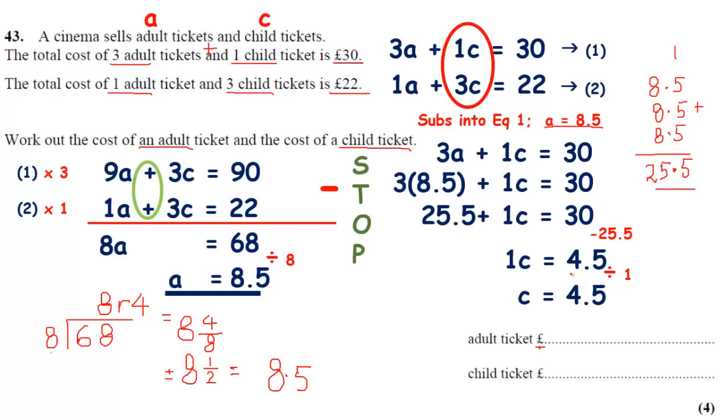1C, I'm just going to divide by 1, the number in front of the C there. Doesn't make a difference. C is 4.5. So 1C is 4.5, 4 pounds 50. That's what I'm going to write in the answer space.